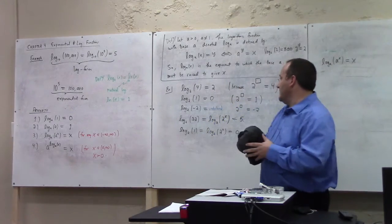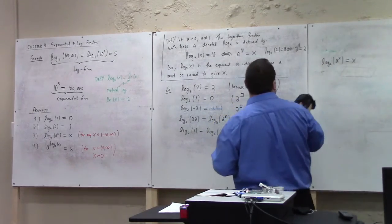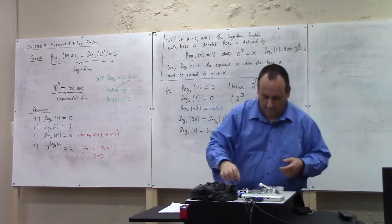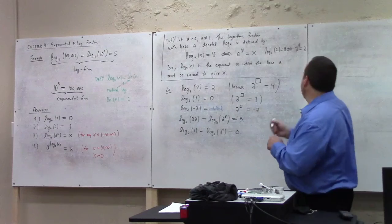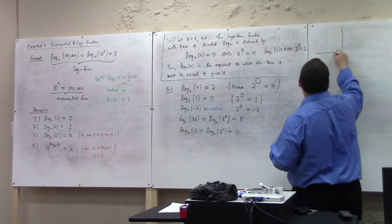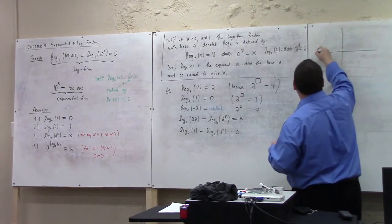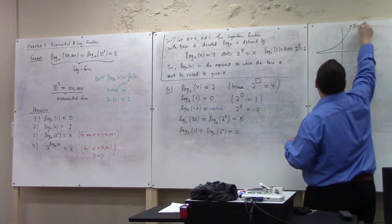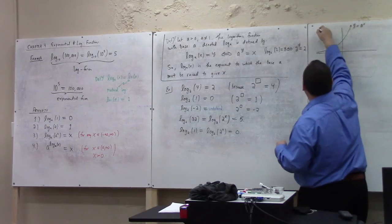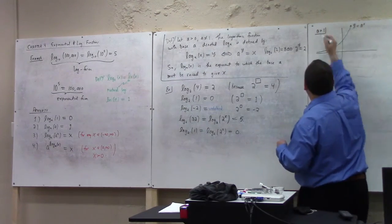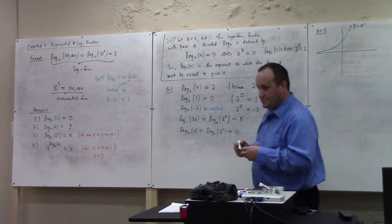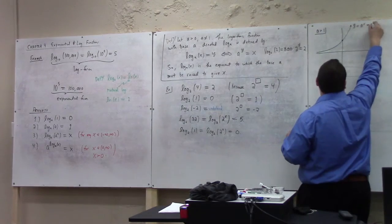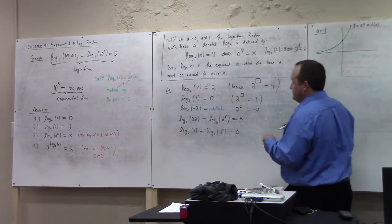And the time that remains, though, let me just talk about the graph. So what does the graph look like? Can you tell me? So if the exponential looks like this, and let's focus on the A greater than 1 case. So if this is the graph of the function, what's the graph of the inverse function? What do we do?